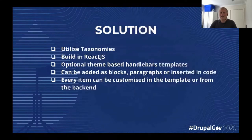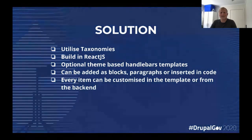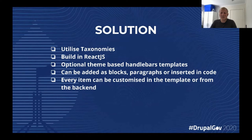The solution we picked was to use taxonomies in Drupal. They are already there and people are familiar with them, so getting any content editor or Drupal admin on board should be easy. We opted to build it in ReactJS because that's something we internally have experience with and it seems very suitable for this use case. We also added Handlebars to compile the template if needed — you don't need to touch the React code; instead you can just work with the Handlebars template.